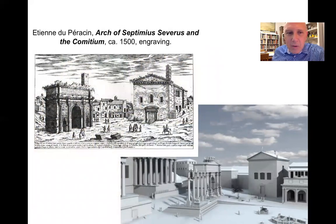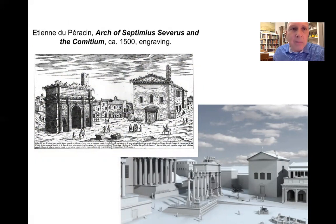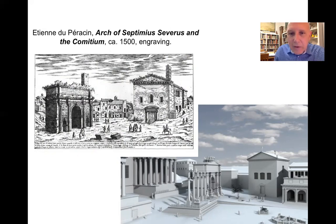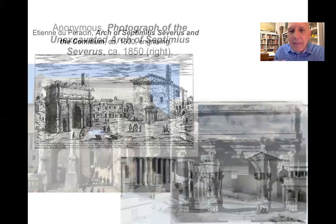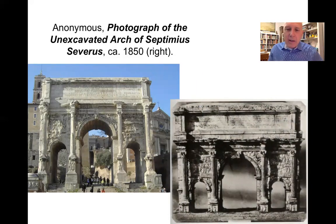These two images show a little of the archaeology and survival history of this archway. The print on the left, from around 1500, is a high Renaissance image by a Frenchman named Étienne du Pérac. It shows the ancient Curia as it appeared in the Renaissance — around 1500 — with much of it still underground from the rubble of the destroyed Roman capital. The same is true of the archway — much is visible but about a fourth of it is underground. The base and platform upon which the structure stood were underground for most of the Middle Ages and into the Renaissance, excavated as late as the late 19th century.